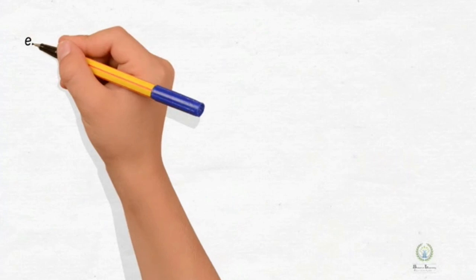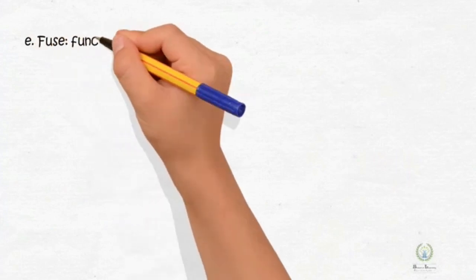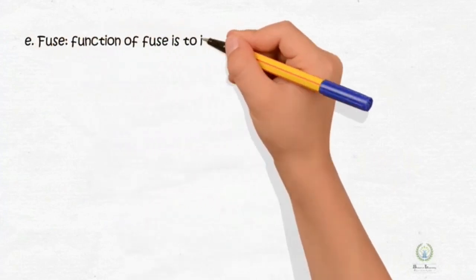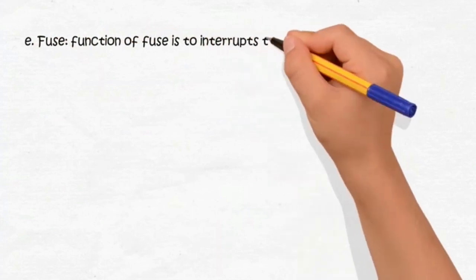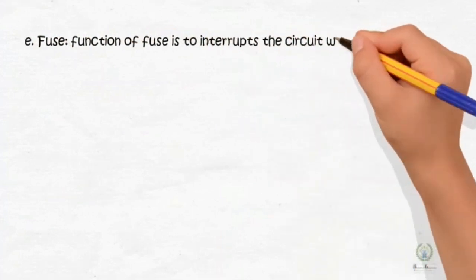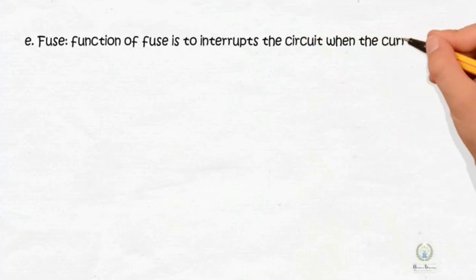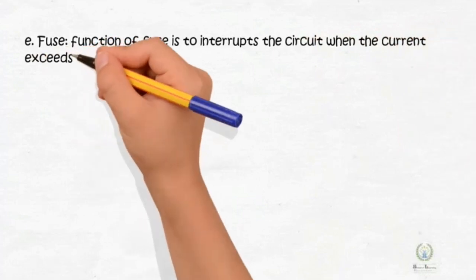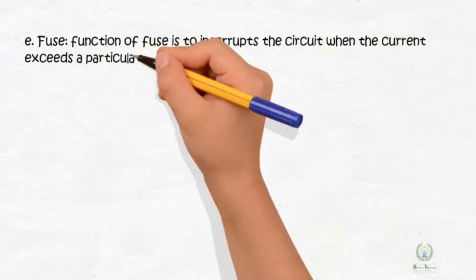E: fuse. What is the main function of fuse? We can write the answer is: function of fuse is to interrupt the circuit when the current exceeds a particular level.